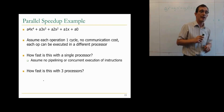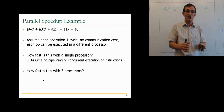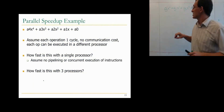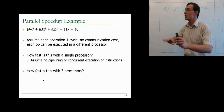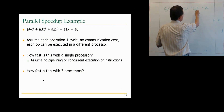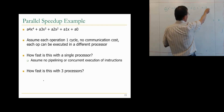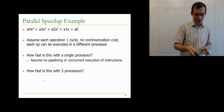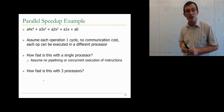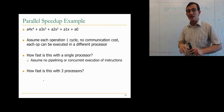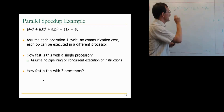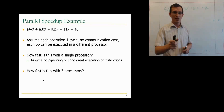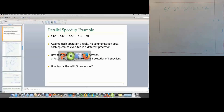The second question is how fast is this with three processors? Assume each operation takes one cycle and there's no communication cost. Take some time to work through this yourself. Try to figure out the single-processor cycle count and the three-processor cycle count before seeing the answer.